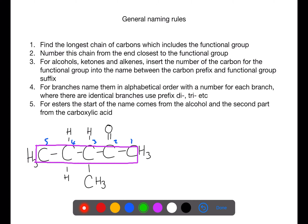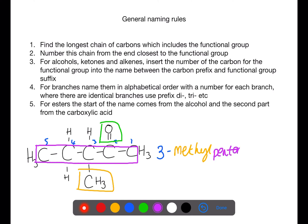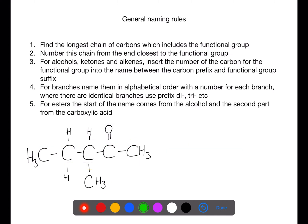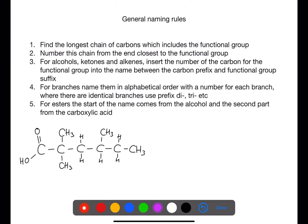Let's look at a couple of examples. Here we have a carbon chain of five. On carbon number two we have a carbonyl functional group, making this a ketone, and on carbon number three we have a methyl group. To name this, we give the number for the methyl group followed by the methyl branch. We then have five carbons with single bonds, so that is pentan, and on the second carbon we have the ketone functional group giving the suffix -one, giving us 3-methylpentan-2-one.